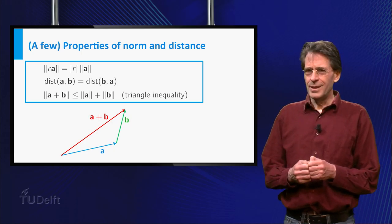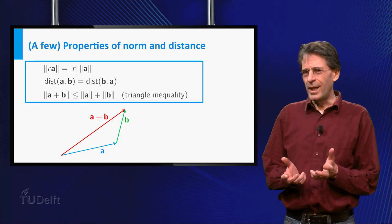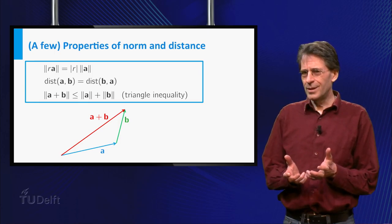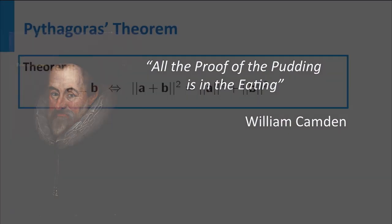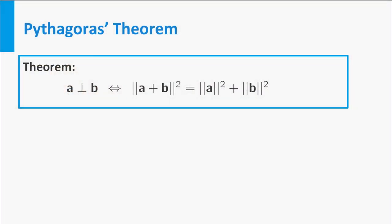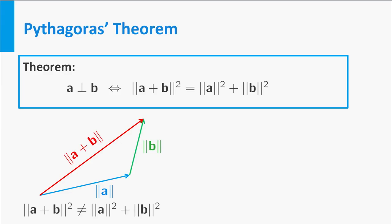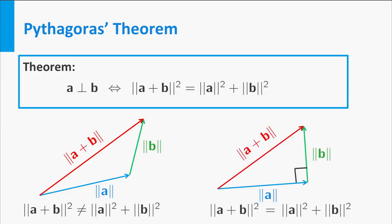From a picture it seems quite obvious. But, as you ought to know, a picture is not a proof. Pythagoras theorem also holds in Rn. It states that a and b are orthogonal if and only if the square of the norm of a plus b equals the sum of the squares of the norms. The formula may look unfamiliar. However, two pictures tell the story. You see how?